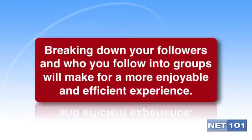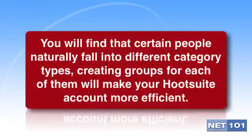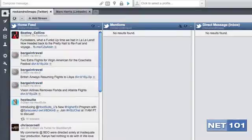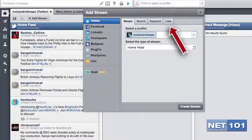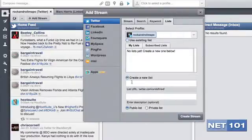There will be some people that you'll follow because they have great information about your industry or community. There will be other people that you will follow because they're your customers or potential customers. You may wish to separate who you are following into at least these two different kinds of groups. To do this, go to your Home button and click the button that says Add Stream. Confirm you are on Twitter and then click on the tab that says Lists. Create a new list called Industry and a new list called Customers. Then hit the Create Stream button for each one.